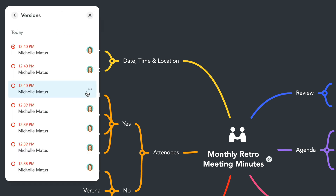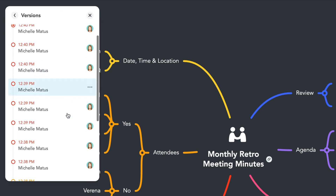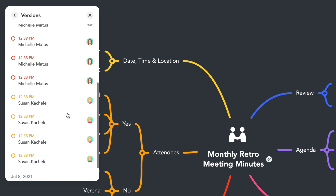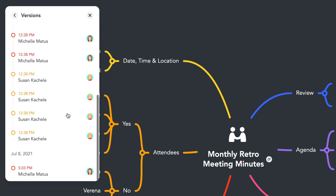Here you can see the entire changelog of your map in reverse chronological order. Because this map is shared with a collaborator, you can see the changes made by each collaborator with their name and avatar.